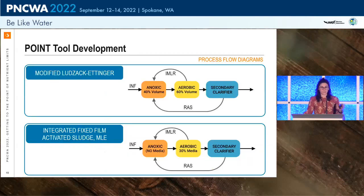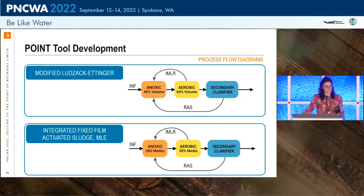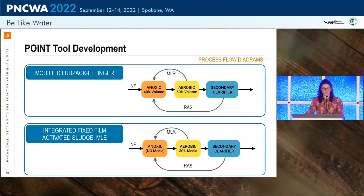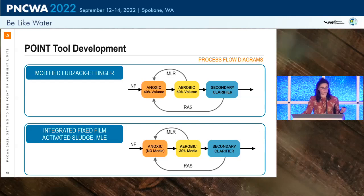We simulated four different processes. The first is the Modified Lutzack-Ettinger (MLE) process, which has an anoxic zone before an aerobic zone — 40% volume anoxic, 60% aerobic — with an internal mixed liquor recycle (IMLR) and a RAS from the secondary clarifier back to the anoxic zone. For the IFAS process, we used the same MLE configuration but added 30% media fill to the aerobic zone, increasing aerobic capacity by adding a biofilm process. All scenarios used the same volumes for low, medium, and high wastewater strengths.